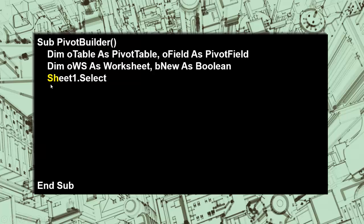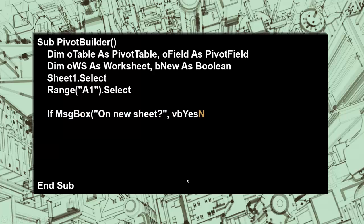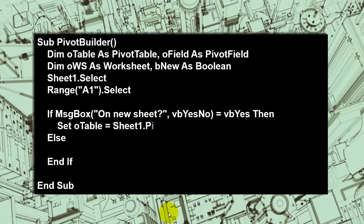Let's make sure that we always start on Sheet 1, where the database is located, and make sure that we are in cell A1 at the beginning of the database. We ask the user: do you want the pivot table on a new sheet or on the same sheet as where the data set is? If they say yes, we set the O table variable of the pivot table type to the pivot table wizard of Sheet 1.